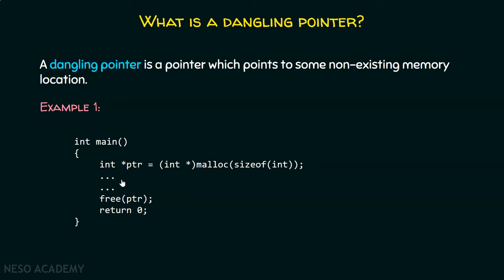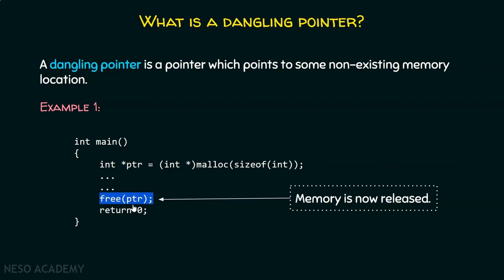After performing some operations, what we are trying to do here is free the memory — that is, release or de-allocate the memory. So malloc has allocated some memory, and after performing some operations, we are de-allocating it using the free function. This function is used to de-allocate the memory previously allocated by malloc.